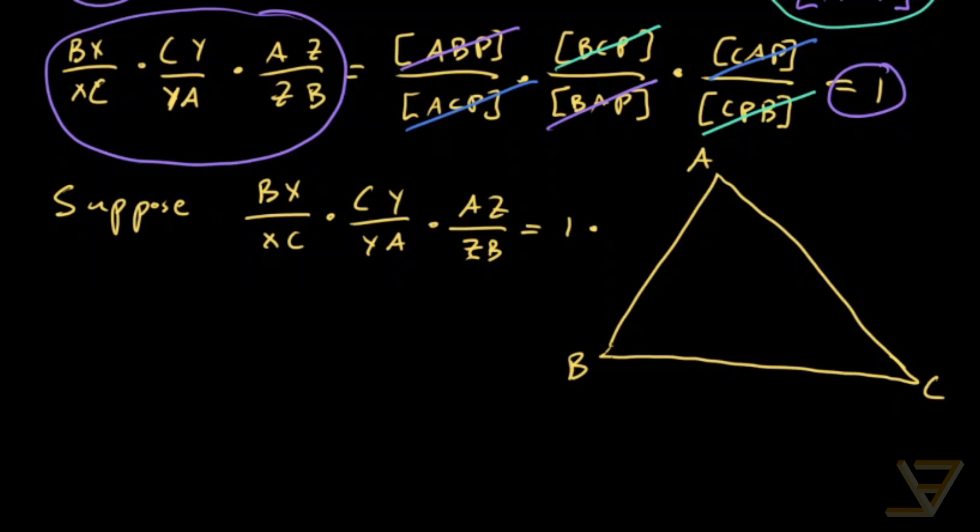So suppose we have a triangle ABC. And suppose that we draw the Cevian out of B which goes to Y, and the Cevian that goes out of C which goes to Z. And we don't know if the Cevian out of A is going to go through this point. But we're going to show that it does. So let's say it's just some generic Cevian like this that goes to X here.